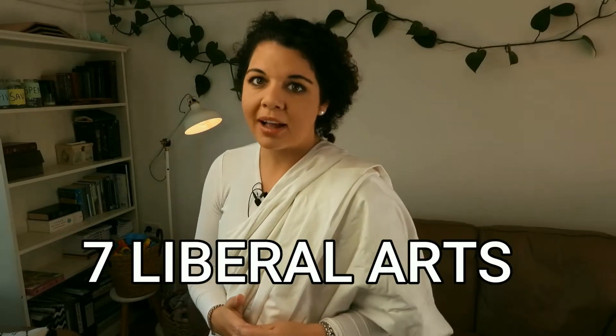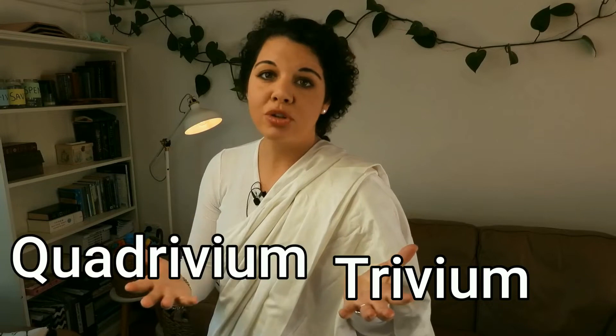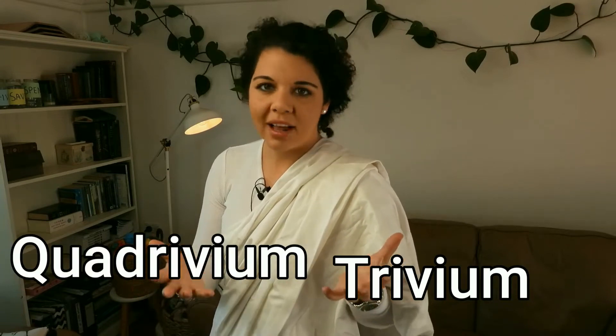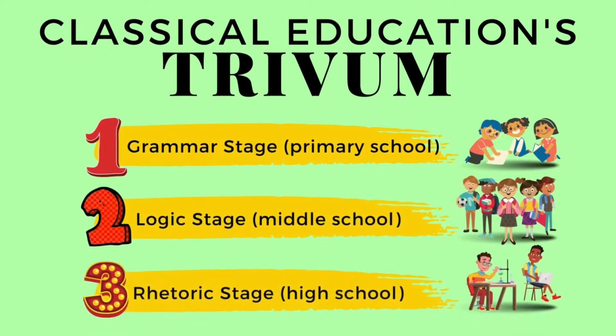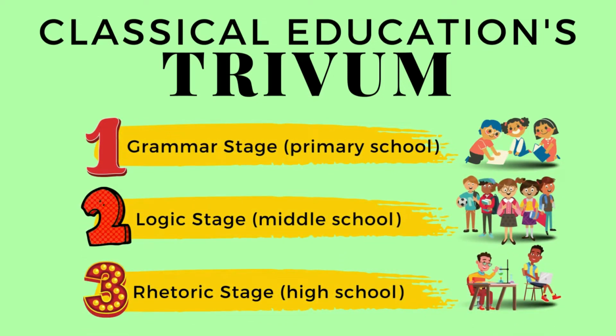Classical education is made up of the seven liberal arts which includes the trivium and the quadrivium. When you're talking about classical education in terms of homeschooling your children or at a school, you're usually just talking about the trivium, which is the first three of those seven liberal arts: the grammar stage for young kids, the logic stage for middle school kids, and the rhetoric stage which is for high school aged children.